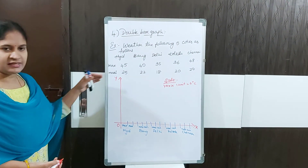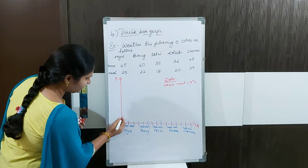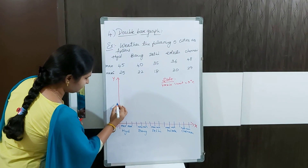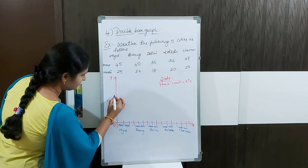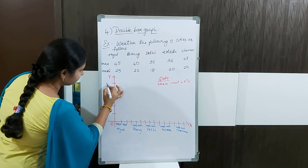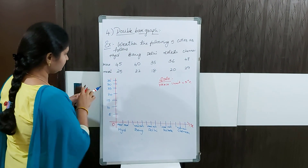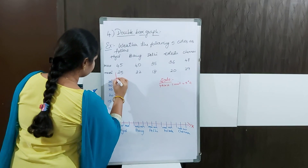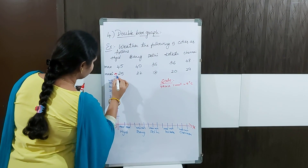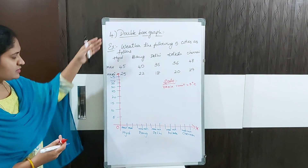I am taking 1 unit as 5 degrees centigrade difference. So the first unit is 5, second unit is 10, then 15, 20, 25, 30, 35 — I can extend this line now — 40, 45. If the graph paper is a big one, you can extend the line there.